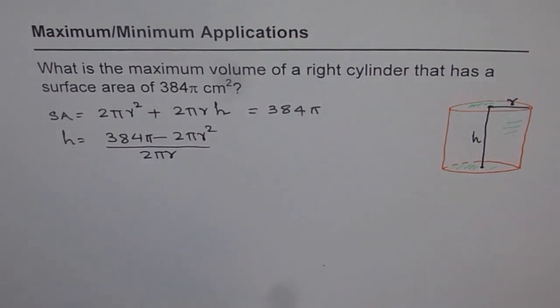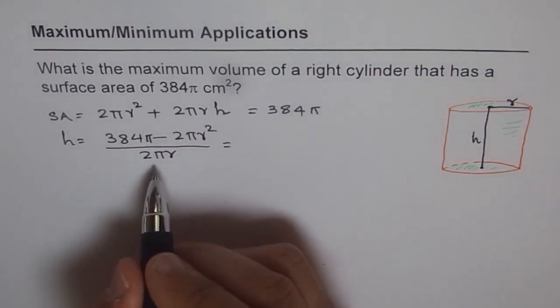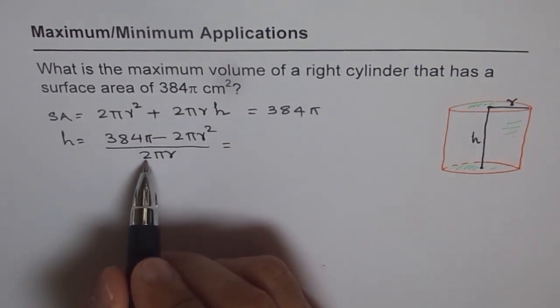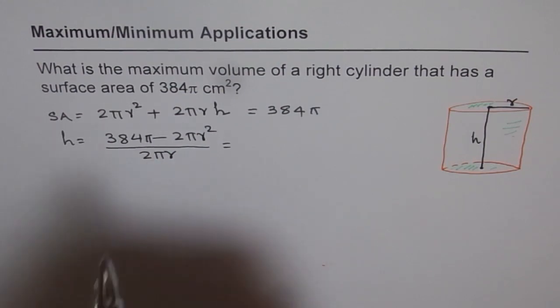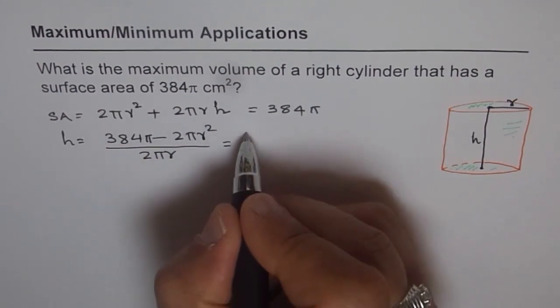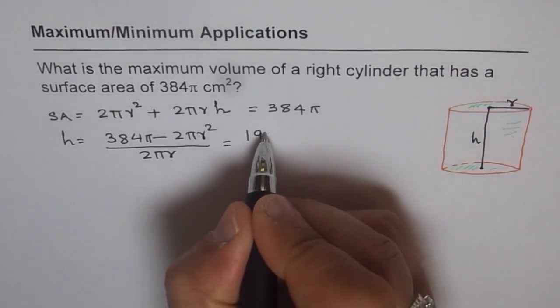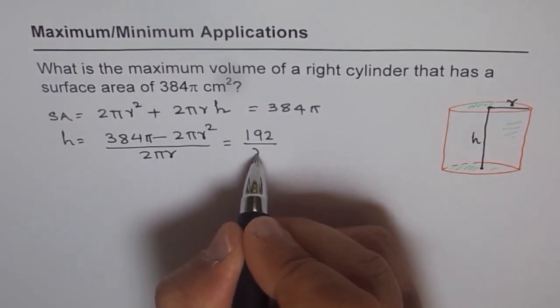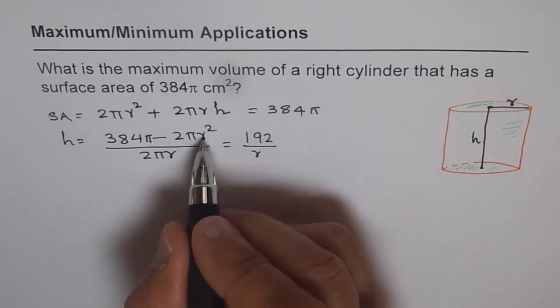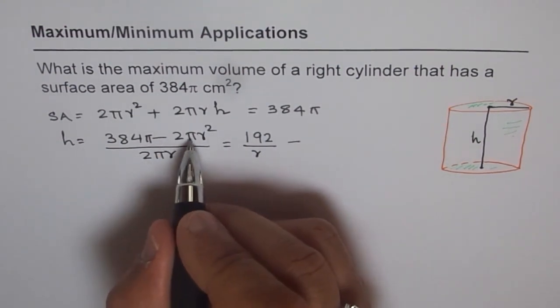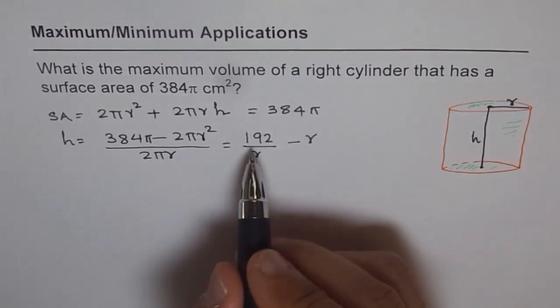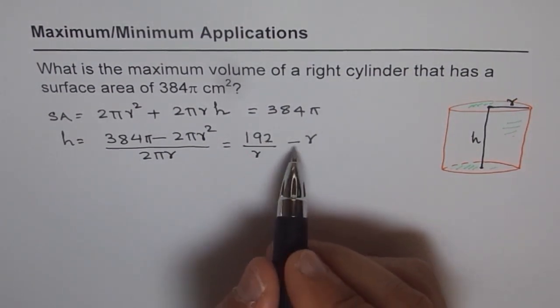From here, we can find what h is. So h equals (384π - 2πr²) / 2πr. Let's simplify this. First term: 384 divided by 2, π divided by π will be 1. So we get 192/r. For 2πr²/2πr, π cancels and we get r. So h equals 192/r - r.